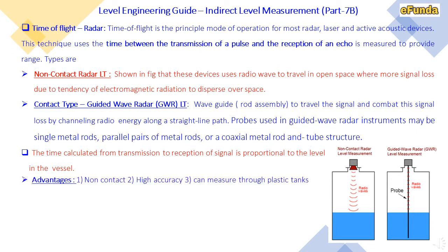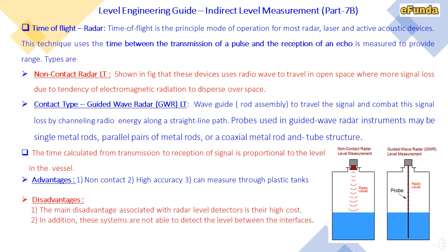Non-contact type radar advantages: high accuracy and can measure through plastic tanks. The main disadvantage of radar level detectors is their higher cost. In addition, these systems are not able to detect the level between interface points. We will continue this topic in detail using animation for better understanding of the time of flight radar principle.